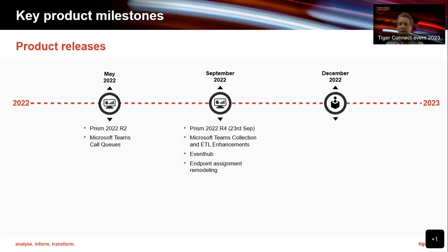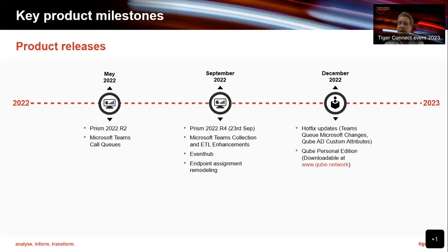We also did background work called endpoint assignment remodeling, where we needed to refactor the ways that the directory, endpoints, and users were assigned to each other in Prism, to support some of the newer cloud services we were doing R&D around. In December, it wasn't a major release but we did do hotfixes — some Teams cube Microsoft changes and added functionality to Cube. We also launched a personal edition of Cube.